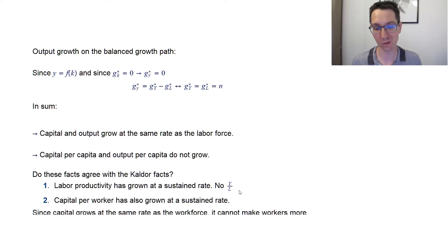Second Kaldor fact, capital per worker has grown at a sustained rate. Is that the case? Well, no, for the same reason. Here we have big K over L equals small k. And we've seen that small k actually reaches a steady state. So let's see. This constant. This constant.